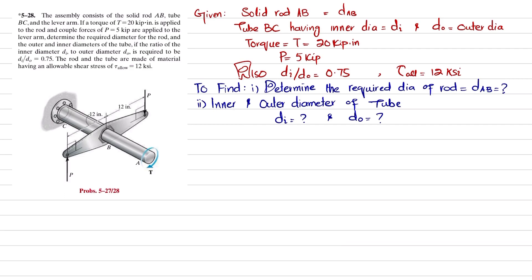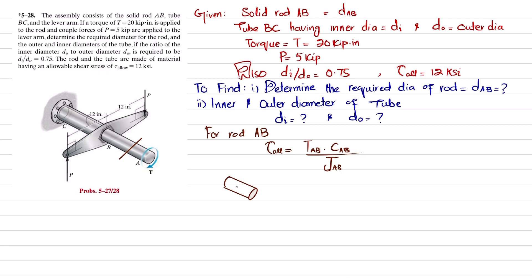For rod AB, we know that the allowable shear stress equals torque T_AB times c_AB (the radius) divided by J_AB, where J_AB is the polar moment of inertia of this rod. First we will find the torque. If you cut the rod and draw the free body diagram, you get the following setup.